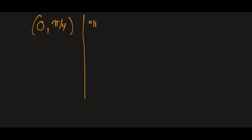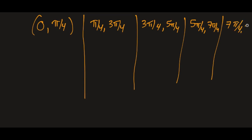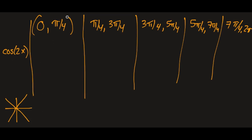We set up intervals: 0 to pi over 4, pi over 4 to 3 pi over 4, 3 pi over 4 to 5 pi over 4, 5 pi over 4 to 7 pi over 4, and 7 pi over 4 to 2 pi. We consider whether cosine of 2x is positive or negative in each. Testing pi over 6 in the first interval: cosine of 2 times pi over 6 equals cosine of pi over 3, which is definitely positive.